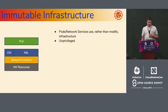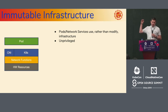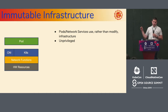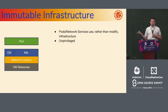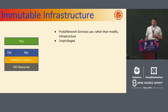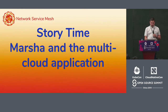From the immutable infrastructure point of view, your pods run at a high level, and you cannot easily change any particular networking functions — they are abstracted through the Kubernetes and CNI APIs. Pods really cannot request any specific networking capabilities from the infrastructure. So let's look at our example with Marsha.